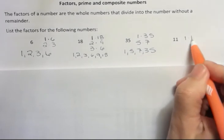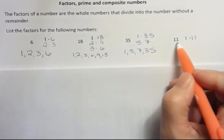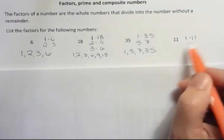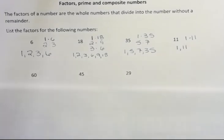11. 1 times 11. 2 doesn't go, because it's odd. 3 doesn't go. 4 doesn't go. 4 times 4 is 16, so I don't need to go any further. This number only has two factors, 1 and itself.